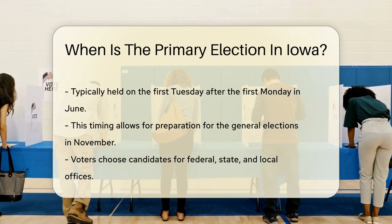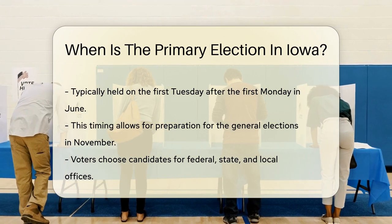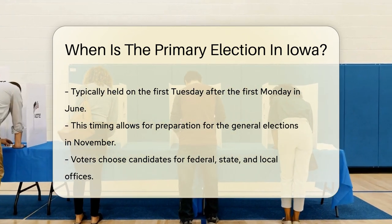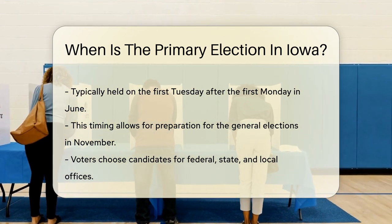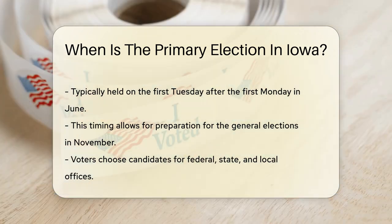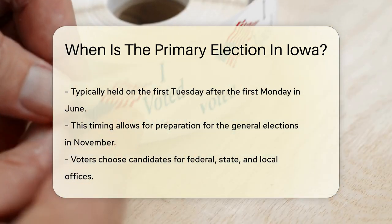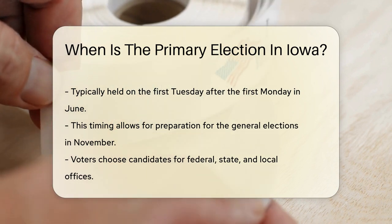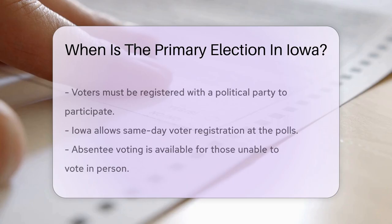Voters choose candidates for various offices, including federal, state, and local positions. To participate, voters must be registered with a political party. Iowa allows for same-day voter registration at the polls, which makes it easier for new voters to participate.